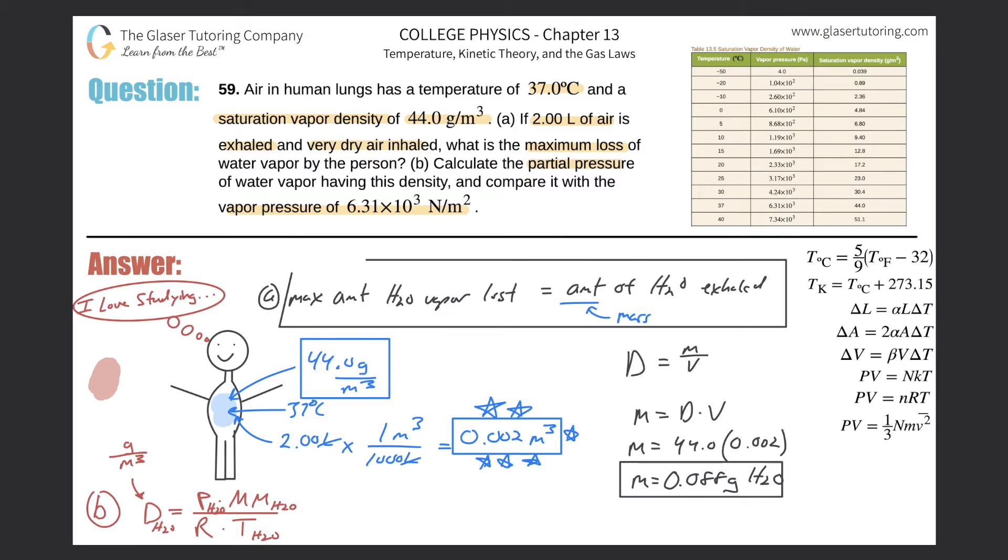We do know the density—the saturation vapor density is 44.0 grams per cubic meter. The pressure is what we're after, so I'll leave that as P. The molar mass of water? Oxygen is 16, hydrogen is 1, so there's two hydrogen and one oxygen—18 grams per mole. Then this would be 8.31 multiplied by the temperature, which is 37 degrees, and we have to convert that into Kelvin.